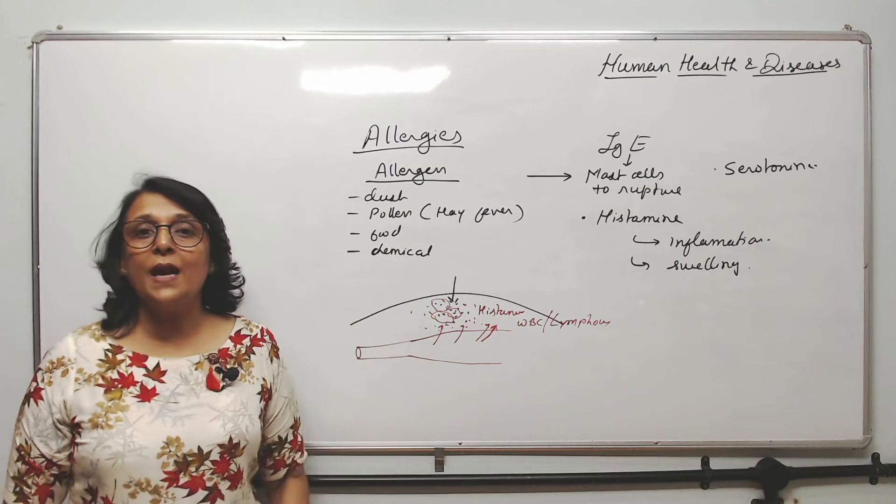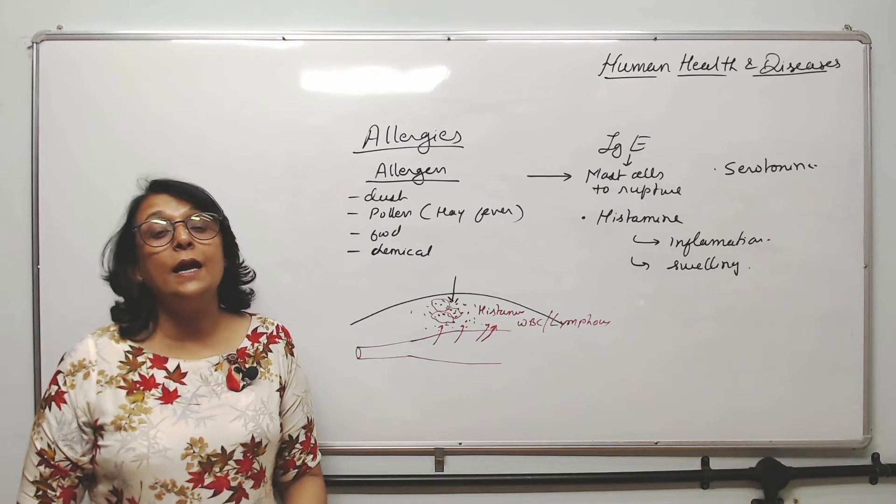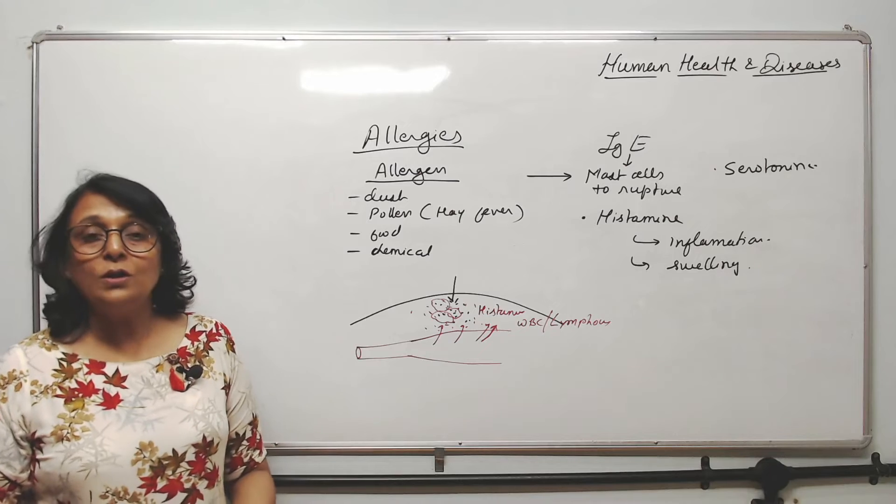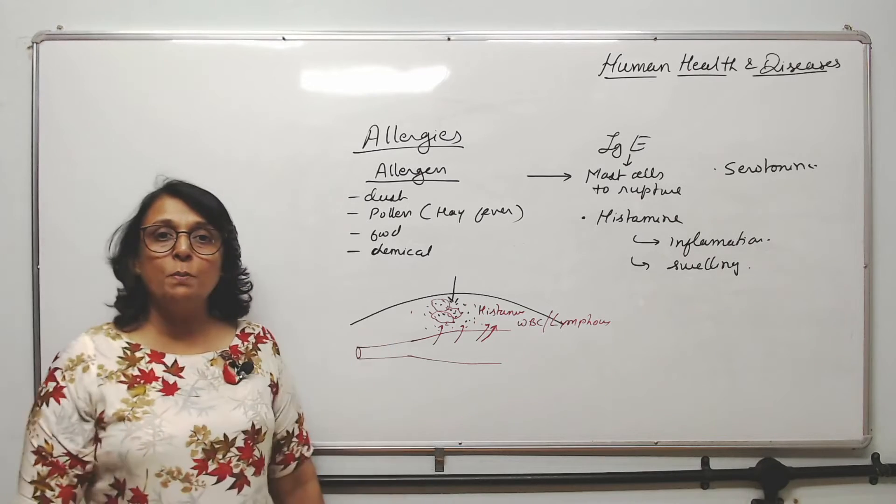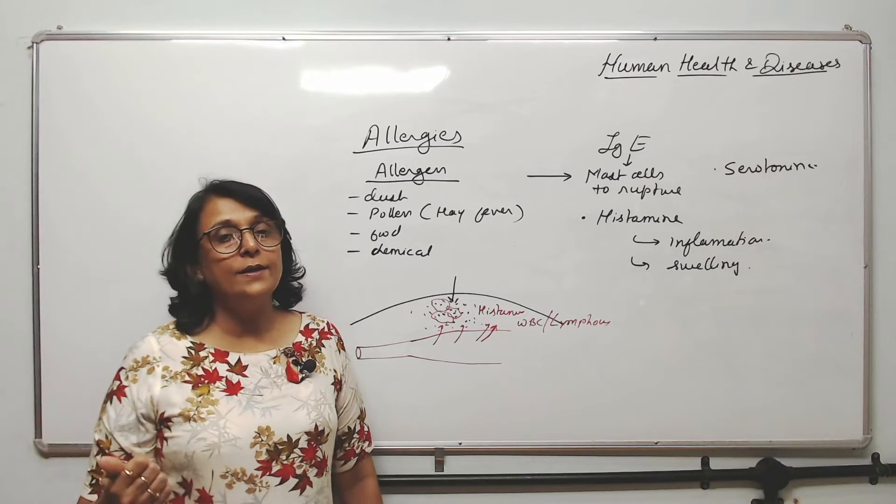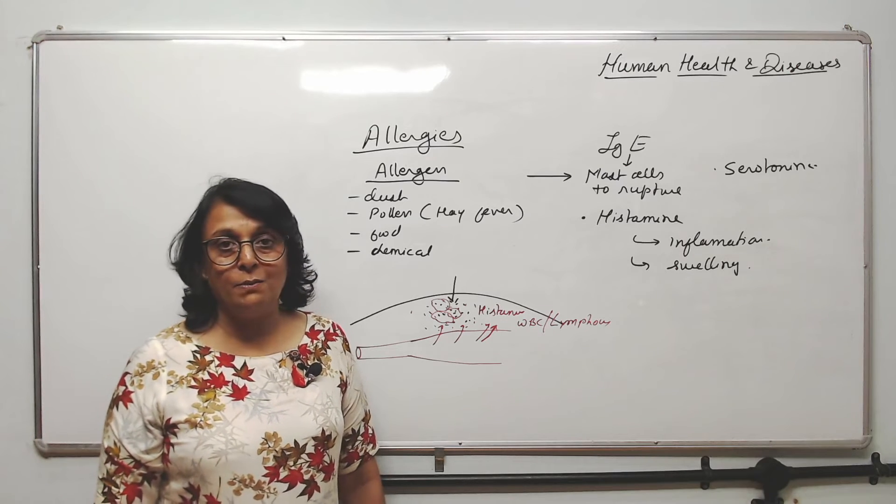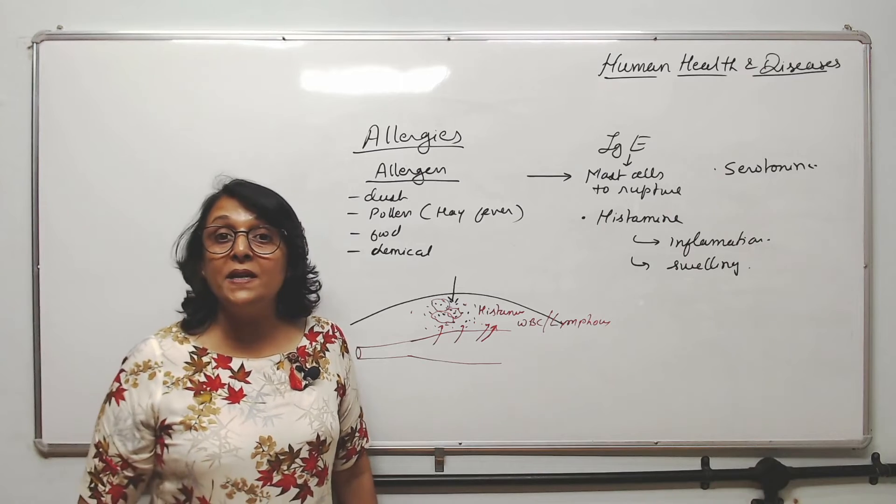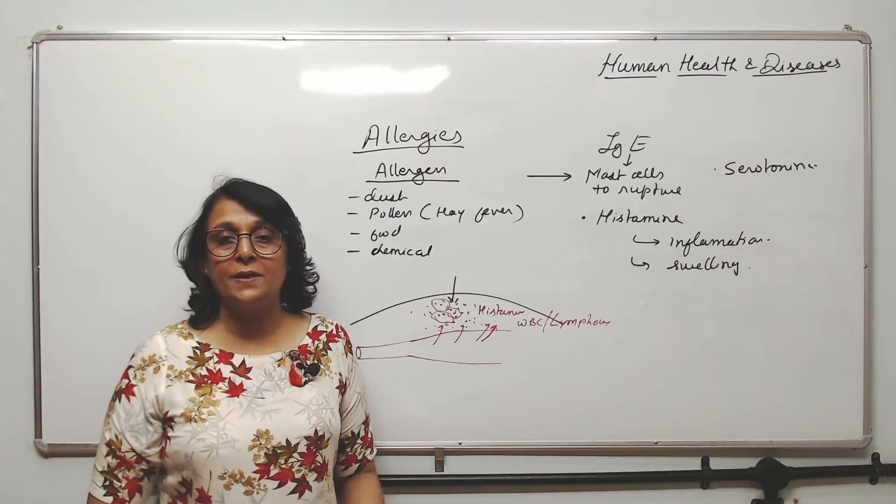The allergic reaction can be localized or it can be diffused. Localized like what happens in case of a bee sting. But diffused when there is allergy to some kind of food item maybe, or some kind of drugs like penicillin. Some people are allergic to penicillin.